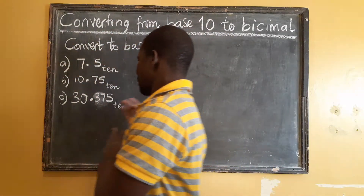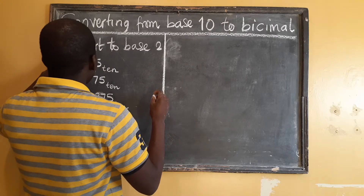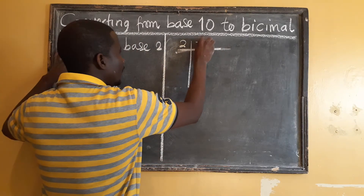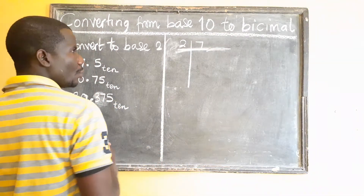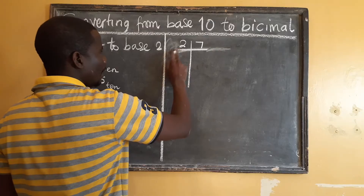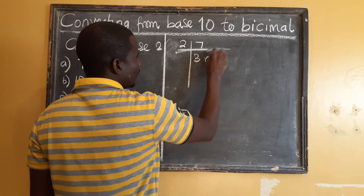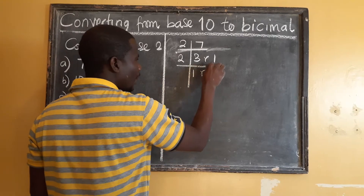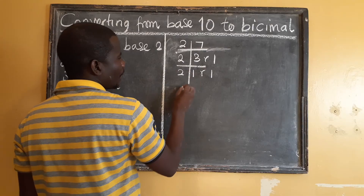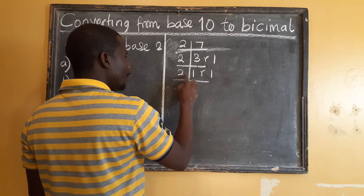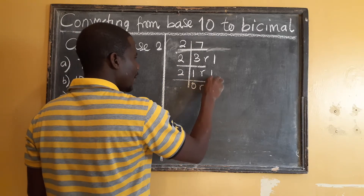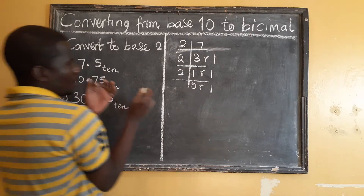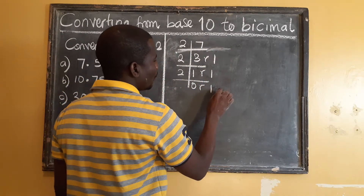I want you to pay particular attention. Let's start with the first one. We have a whole number part and a decimal part. Let's start with the 7. For the whole number we divide by 2: 2 into 7 gives us 3 remainder 1. Then we continue — 2 into 3 is 1 remainder 1. We continue until we have 2 into 1, which is 0 remainder 1.